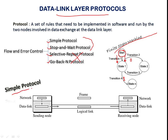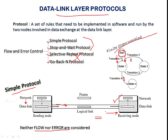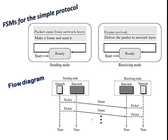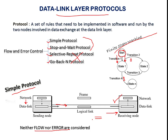In the simple protocol, we don't consider that there is any flow or error occurring in the system. The data link layer collects data and sends it. We assume that the receiver can immediately respond to whatever data is received, meaning the capacity of the receiver is equivalent to the sender. Whenever the sender sends data, all data are collected and processed at the receiver.